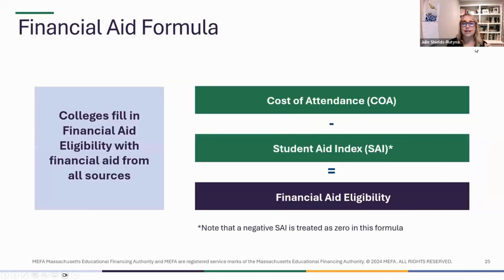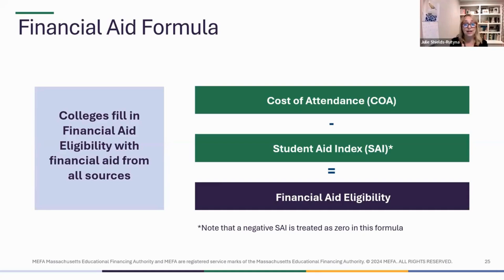The equation is: cost of attendance minus your family's Student Aid Index number, and the difference is your financial aid eligibility. That's the amount colleges work to create an award that either meets your financial aid eligibility or tries to meet a good portion of it. Colleges with more resources might meet your full financial aid eligibility, and you'd only pay your Student Aid Index number, but many colleges can't do that and may not meet all of it.